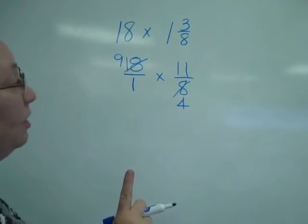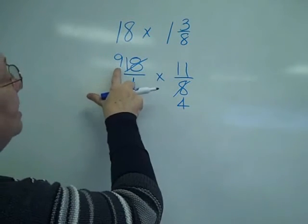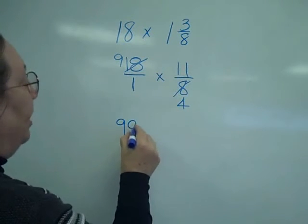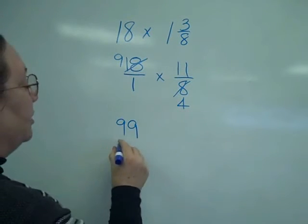Now, that's about all I can do on the canceling. So, I'm going to take 9 times 11 is 99. 1 times 4 is 4.